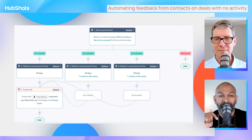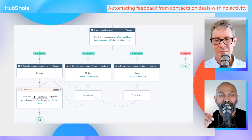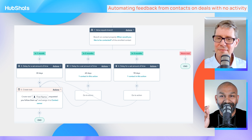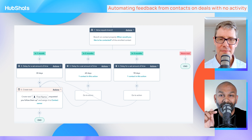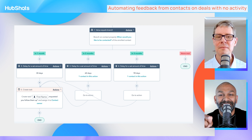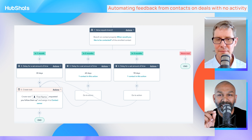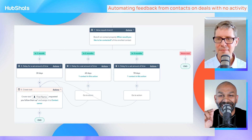What we then do is have another workflow to set a task at those interval periods so the contact owner can contact them. The workflow puts the task into the contact owner's queue at the appropriate time. You might ask why we don't put the task in immediately — it clogs up people's task queues even though it has a later date on it. Also, when setting a task in a workflow, you can choose a date but you can't set it as a future date dynamically. So what we do is have it wait in the branching until that time and then create the task.